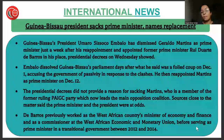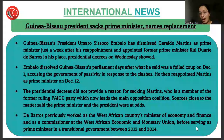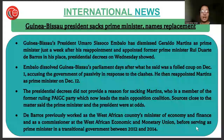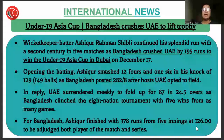Guinea-Bissau's President Umaro Sissoco Embaló has dismissed Geraldo Martins as Prime Minister just a week after his reappointment, and appointed former Prime Minister Rui Duarte de Barros in his place. Presidential decrees showed that de Barros previously worked as the West African country's Minister of Economy and Finance, and as a Commissioner at the West African Economic and Monetary Union, before serving as Prime Minister in a transitional government between 2012 and 2014.